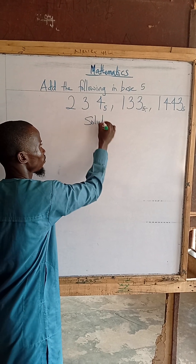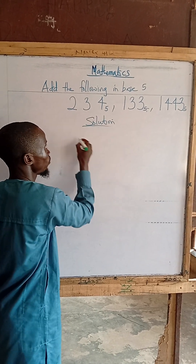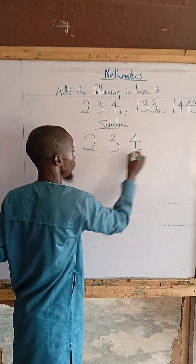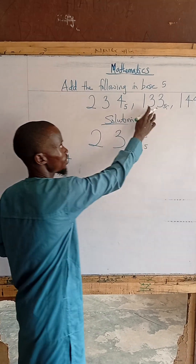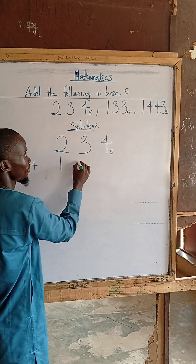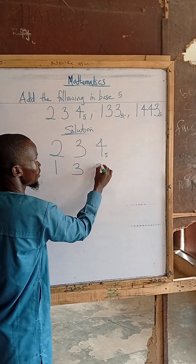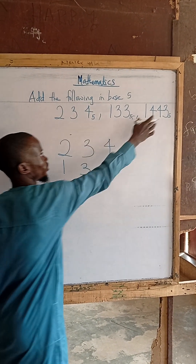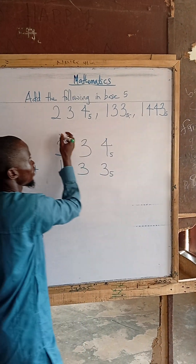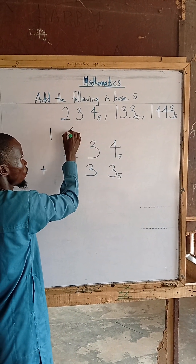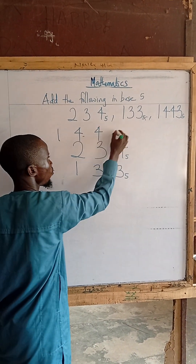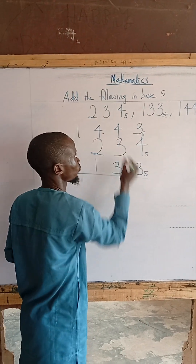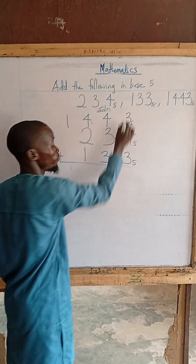The first number we have is 2, 3, 4 in base 5. We want to add this to another number: 1, 3, 3, also in base 5. And another number — putting this one in front, because we have 4 digits — which is 1, 4, 4, 3, also in base 5. I want to add all these together. They are all in base 5.